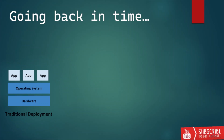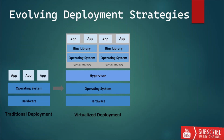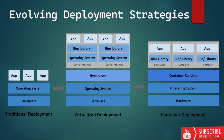It was expensive for organizations to maintain many physical servers for many applications. So as a solution, virtualization was introduced. It allows you to run multiple virtual machines or VMs on a single physical server's CPU. Virtualization allows applications to be isolated between virtual machines and provides a level of security, as the information of one application cannot be freely accessed by another application.